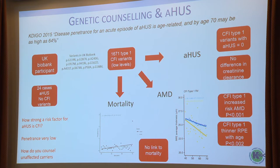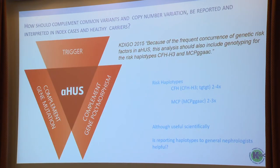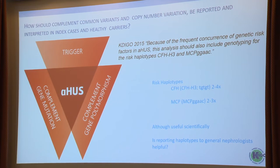The penetrance is very low. What do we tell relatives if they have a Factor I variant? Is there any risk of developing HUS? I think probably not, but it's difficult to say no. The other thing we said in 2015 is that because of frequent concurrence of genetic risk factors in HUS, analysis should include genotyping for risk haplotypes H3 and MCPGGAAC. Most groups have shown an increased risk for these. It's useful scientifically, but is it actually useful for the clinician? The predominant risk is still the mutation.